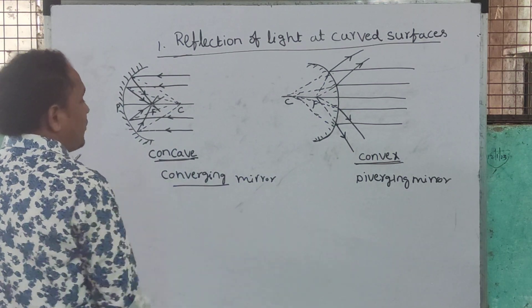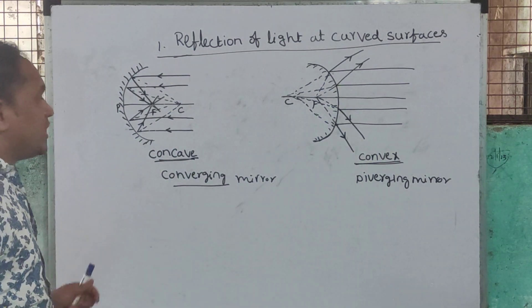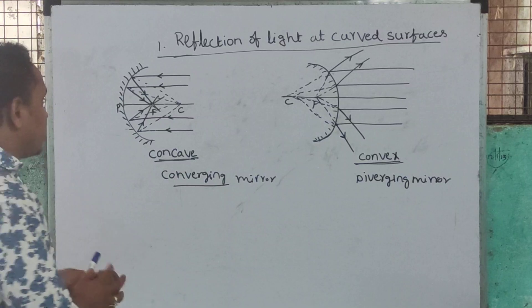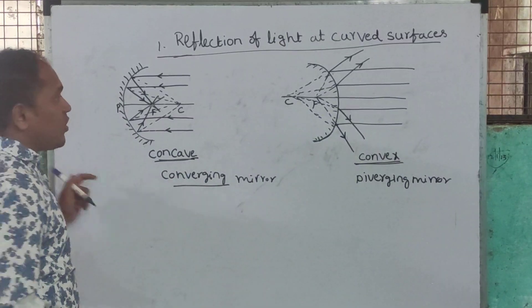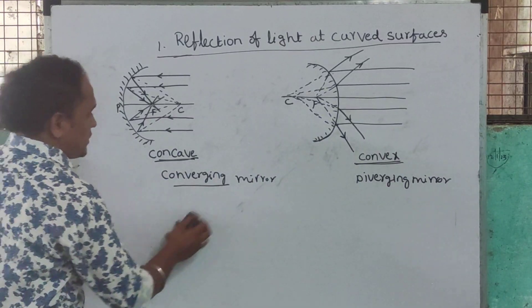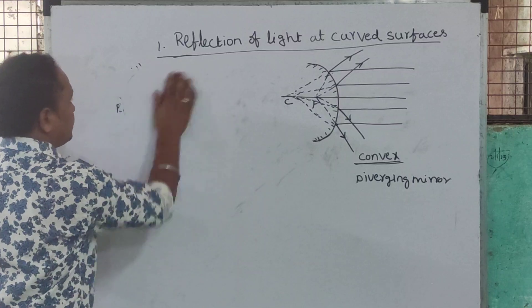These are called ray diagrams of a concave and convex mirror. The concave mirror is called a converging mirror and the convex mirror is called a diverging mirror.